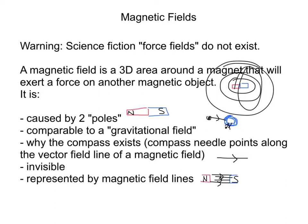Magnetic fields are the reason the compass exists. When you use a compass, the needle points along the vector field line of a magnetic field. So if this line here is a magnetic field line, and we have a compass along that line, the compass needle will point in the direction of the magnetic field.